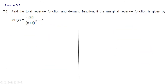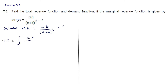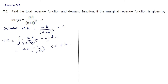Next question from Exercise 3.2: find the total revenue function and demand function if the marginal revenue function is MR = ab/(x+b)² - c, where a, b, c are constants. Total revenue = integral of [ab/(x+b)² - c] dx. Integrating: ab times integral of (x+b)^(-2) = ab × (-1/(x+b)) - cx + k. So TR = -ab/(x+b) - cx + k.